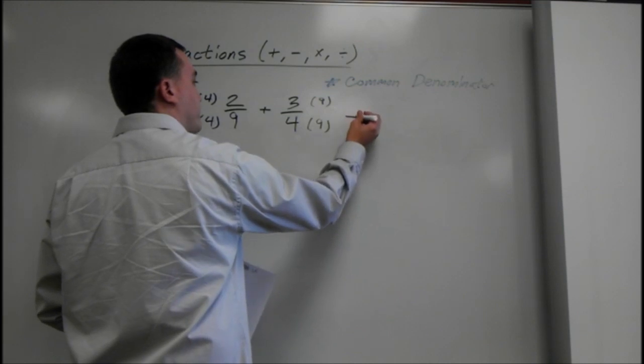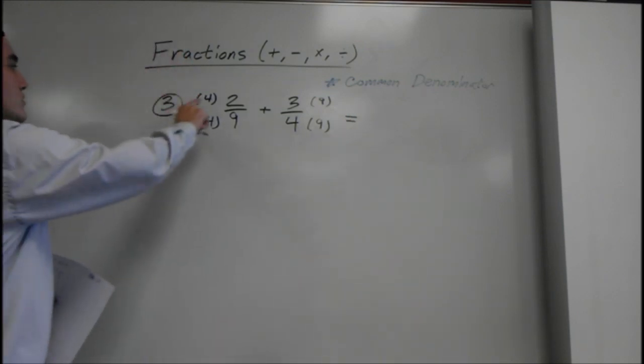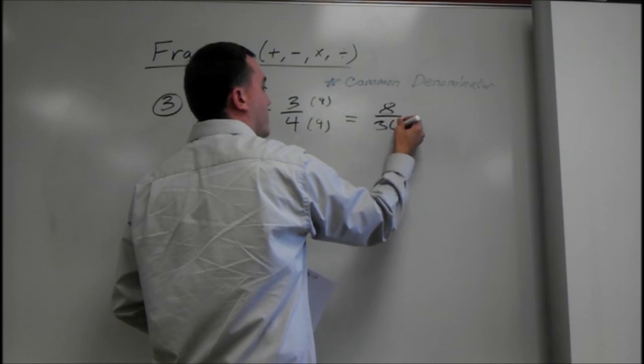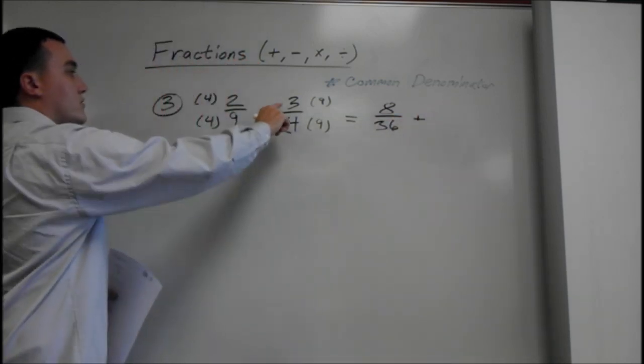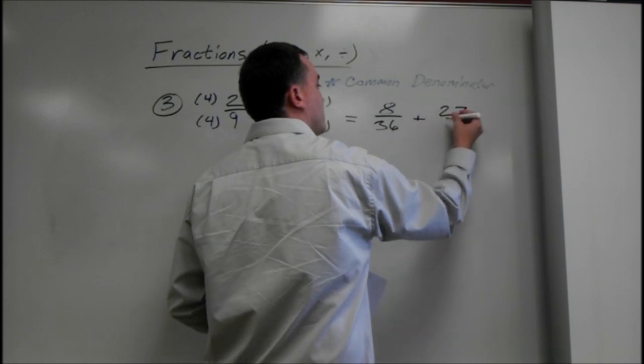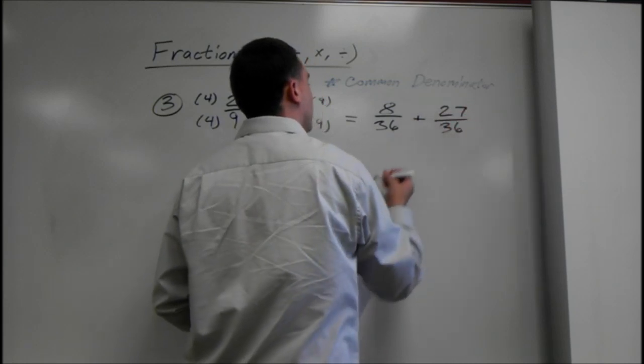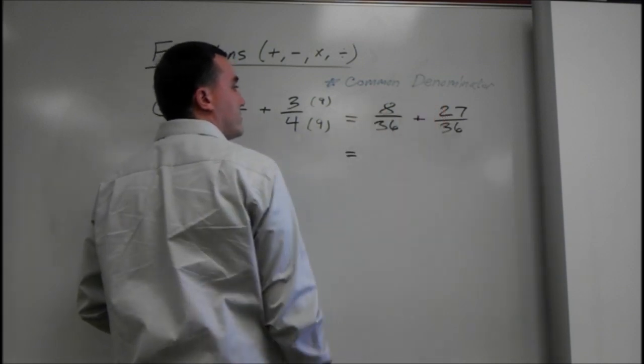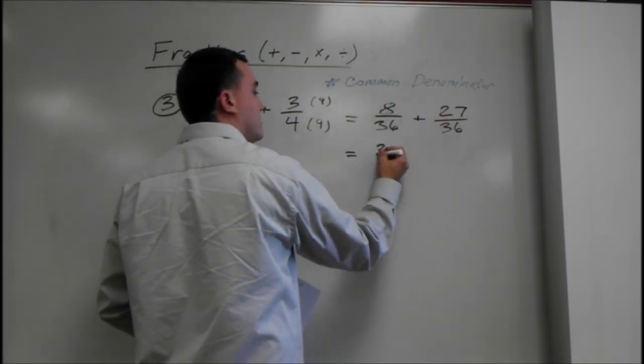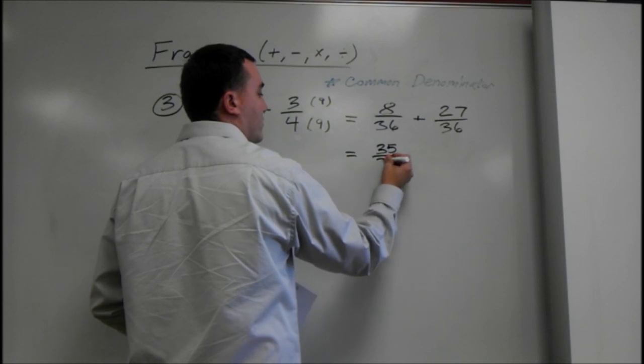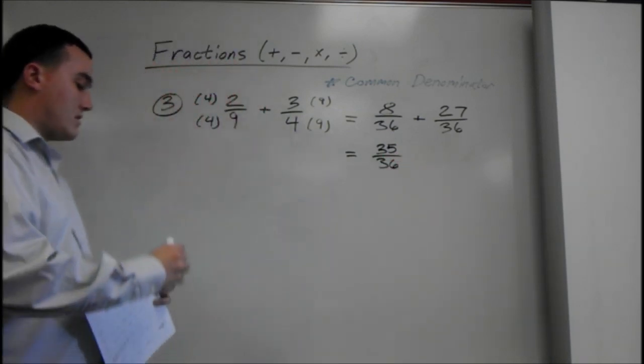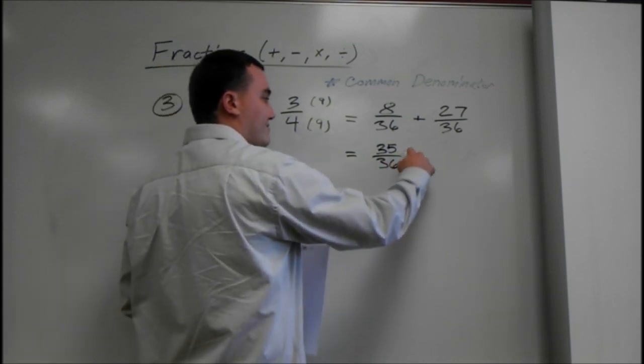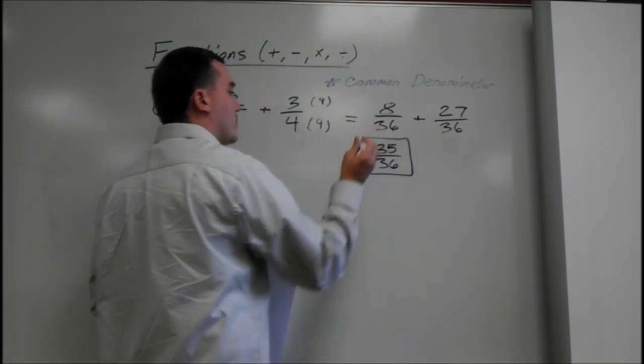So, we multiply it out. 4 times 2 is 8 over 36. Our common denominator. Plus 3 times 9 is 27 over 36. And that comes out to 8 plus 27 is 35 over 36. And then you would think, can we reduce it? But we can't because these are only one number apart. So, we're not going to be able to do that.